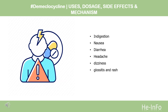D-meclocycline is available in tablets of 150 or 300 mg under the commercial name Declomycin. Common side effects include indigestion, nausea, diarrhea, headache, dizziness, glossitis, and rash.